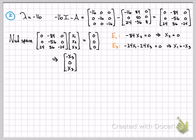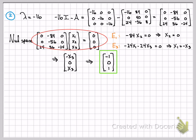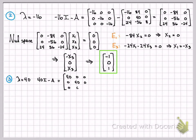So the solution always has zero as the second coordinate, and whatever number is in the third coordinate, I need the negative of it in the x1 spot. There are infinite solutions but they all have that form. I'll set x3 equal to 1, which means x1 must equal negative 1. This vector [-1, 0, 1] forms a basis for the solution for λ = -16. Any scalar multiple is also a solution.